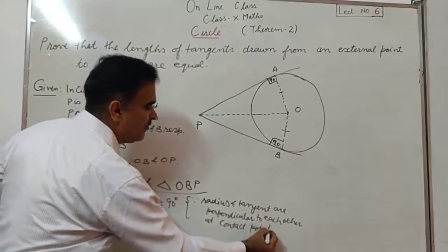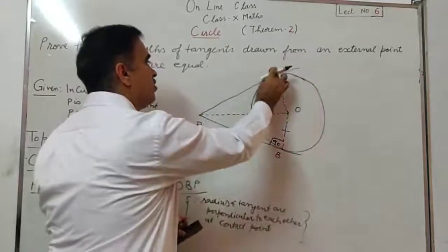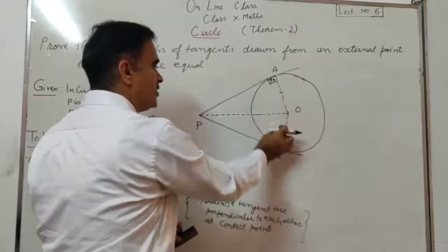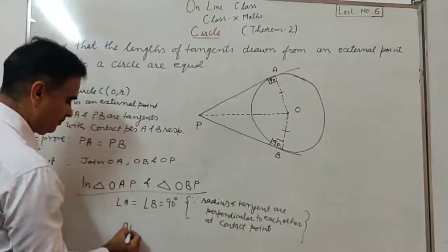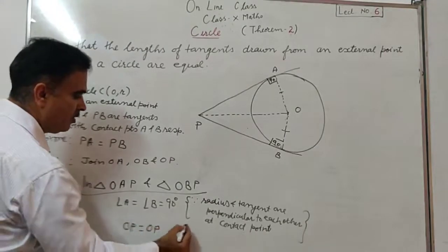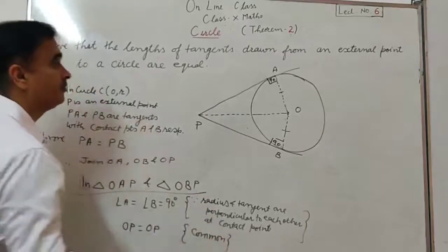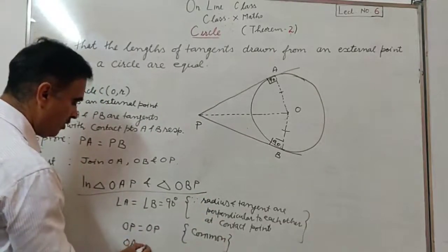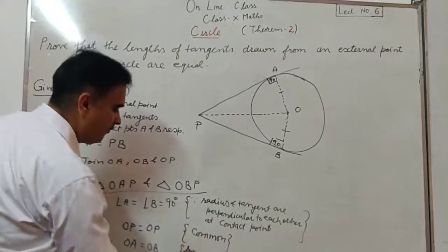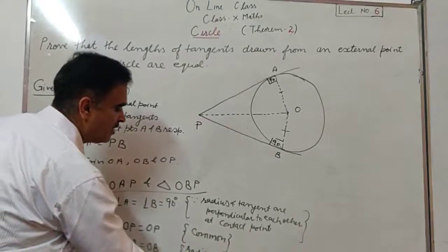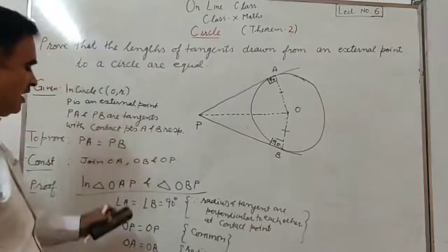We have proved in the first theorem that radius and tangent are perpendicular at the contact point, always making 90 degrees. Here also, the same applies. OP equals OP — this is common. OA equals OB — radii of the same circle are always equal.